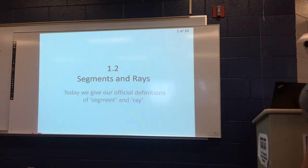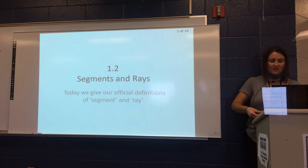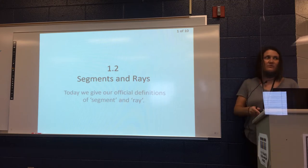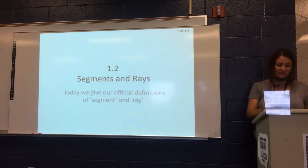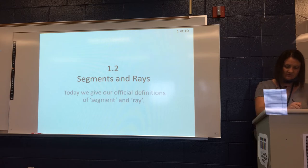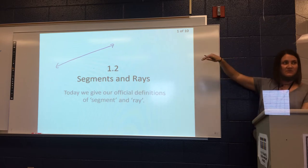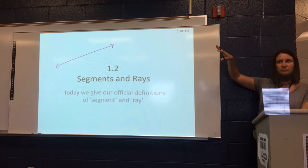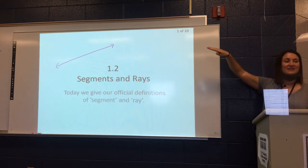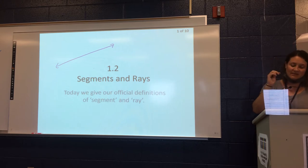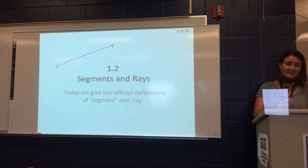Today we are talking about segments and rays. If you think back to when we were talking about lines, remember how we always said there should be arrows at the end of the lines, even though it didn't always draw out well on the worksheets. Lines have arrows on the end — that indicates they continue on forever. As we start talking about segments and rays, you'll see why the arrows are really important, because that's not always the case.